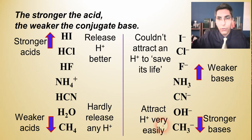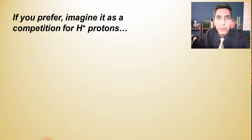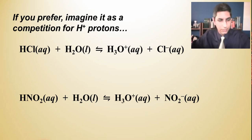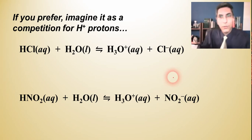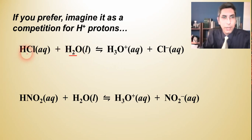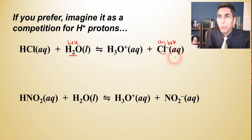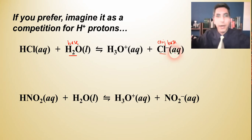The rule is: the stronger the acid, the weaker the conjugate base, and the converse is true — the weaker the acid, the stronger the conjugate base. You can think of this as a competition for H⁺ protons. For example, with HCl and water, water acts as the base and Cl⁻ is the conjugate base — both are competing to steal a proton.